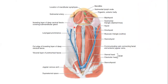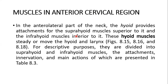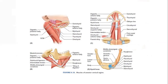This contains the infrahyoid muscles. This is the hyoid bone, and the muscles below it are the infrahyoid muscles. These are the sternohyoid, for example, or the omohyoid — the muscles in the anterior cervical region. The hyoid provides attachment also to the suprahyoid muscles above and below to the infrahyoid muscles. So these hyoid muscles steadily move the hyoid and larynx, and for descriptive purposes they're divided into suprahyoid and infrahyoid muscles. There are attachments, innervation, and actions that are presented in the table.